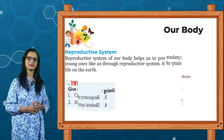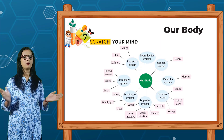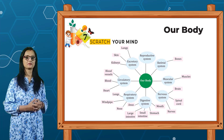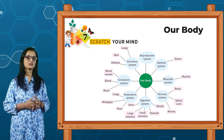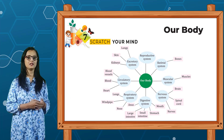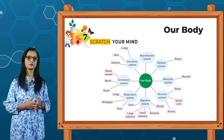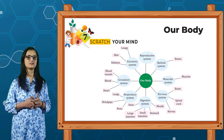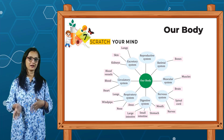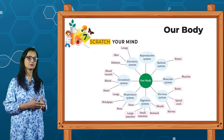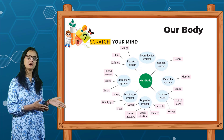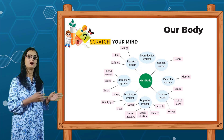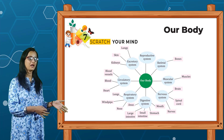Scratch your mind — mind map of our body systems: circulatory system includes vessels, blood, heart; excretory system includes lungs, skin, kidney; reproductive system; skeletal system includes bones; muscular system includes muscles; nervous system includes brain, spinal cord, nerves; digestive system includes mouth, stomach, small intestine, large intestine, anus; respiratory system includes lungs, windpipe, nose.